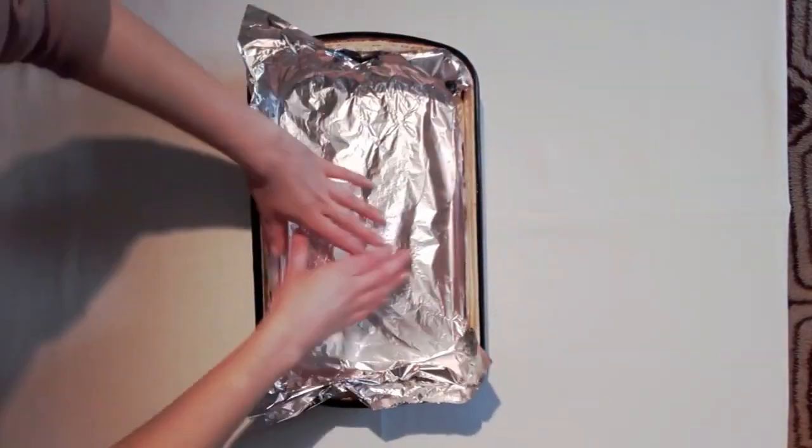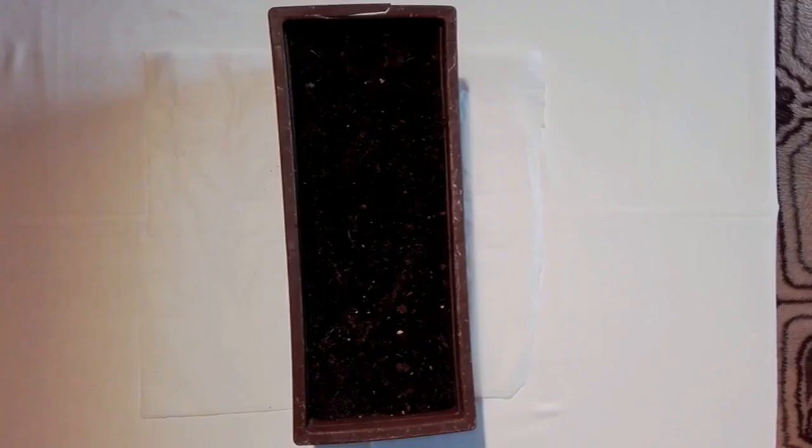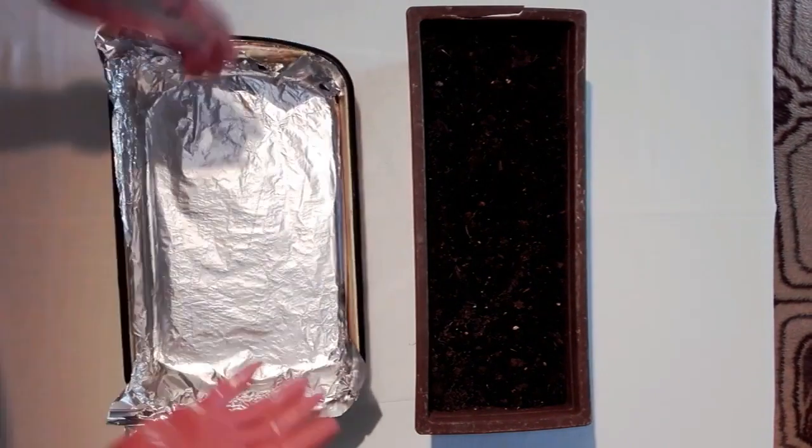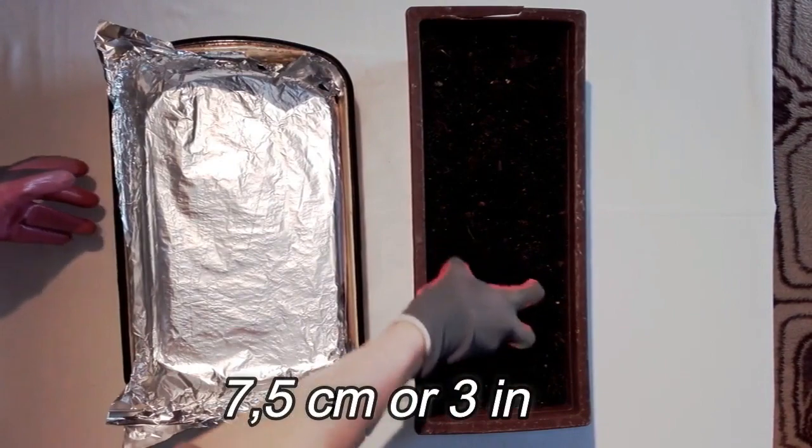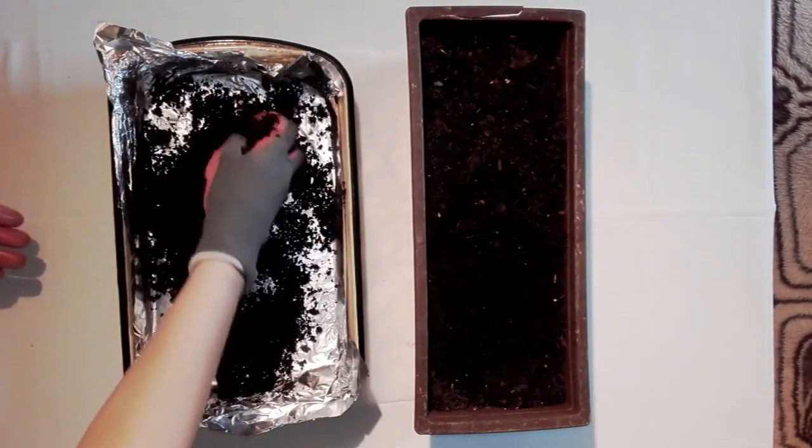First, you will need a deep baking pan covered with aluminum foil. Then, you will need to fill up the pan with about 7.5 cm or 3 inches of soil.